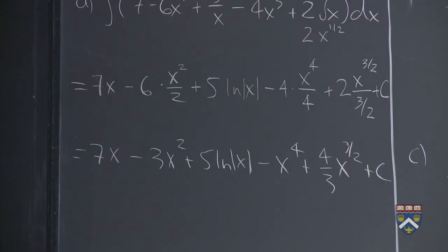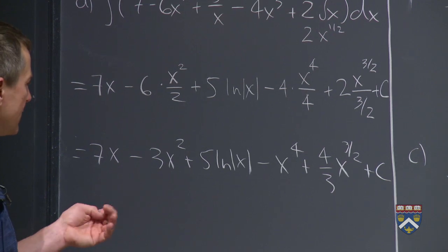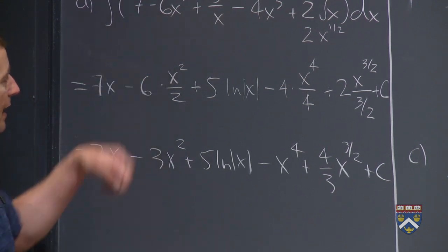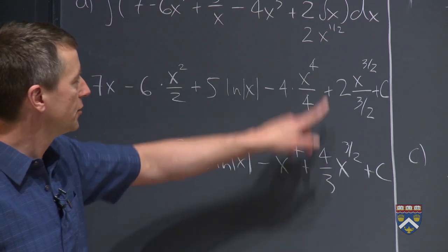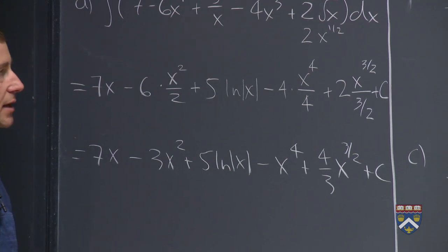And again, you don't need to simplify, but if you like to simplify, that would be a way to do it. And you can always check if you've got the right answer by taking the derivative. Take the derivative of this, you get negative 6x. Take the derivative of this, you get two square roots of x, just like you're supposed to.